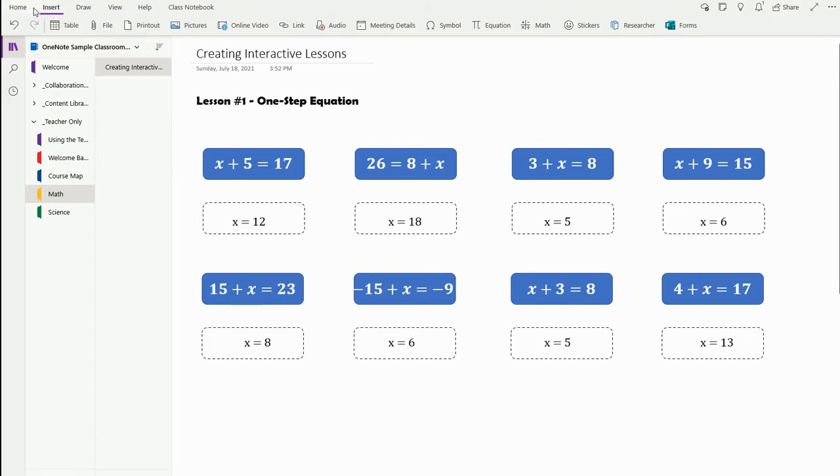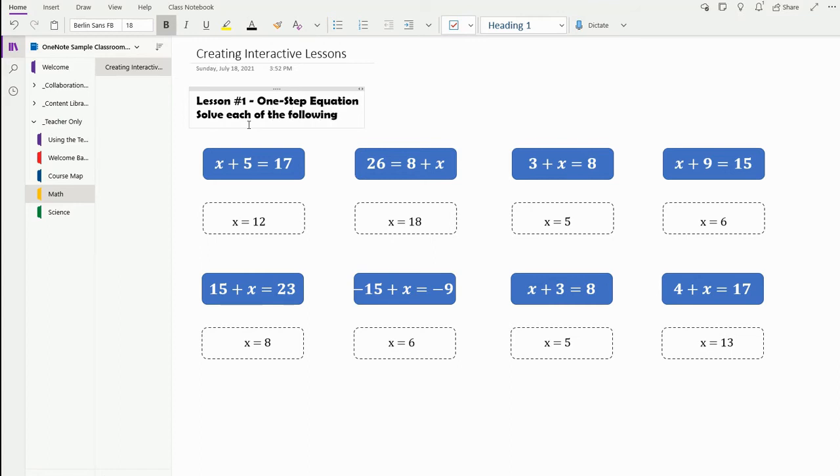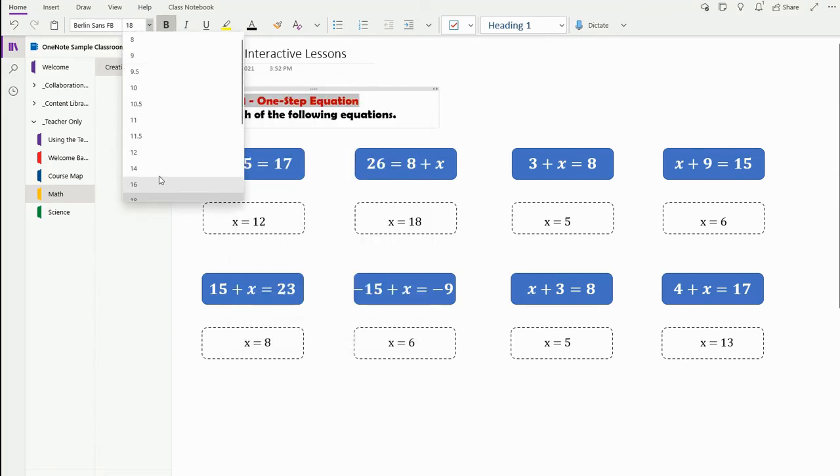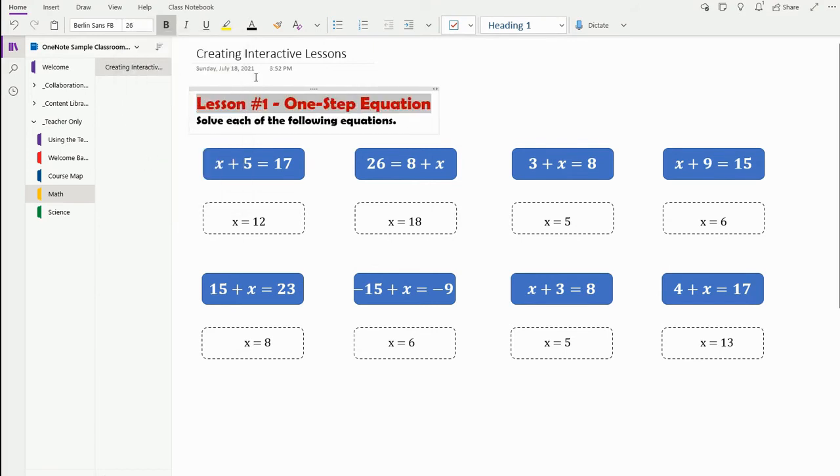I'm going to start putting in directions, so I'm going to go ahead and go to my Home tab or I can just go ahead and click. It says solve each of the following equations. I can separate my title in color by color scheme, I can make that just a little bit bigger so it kind of stands out. I then can come down here and say answer choices.